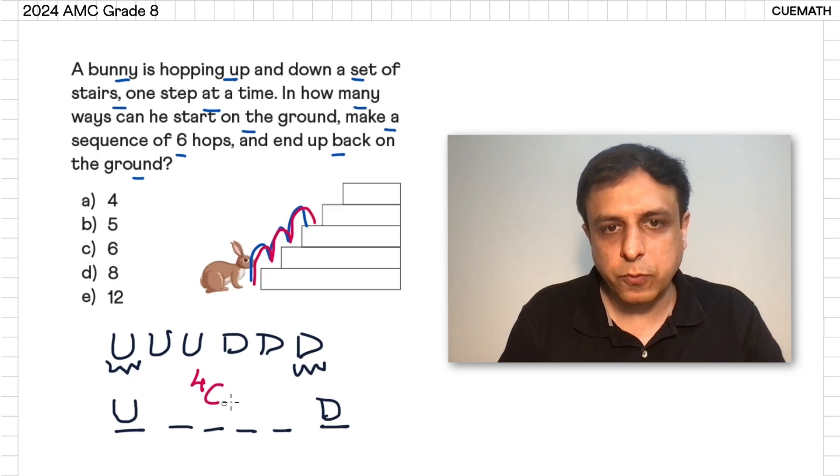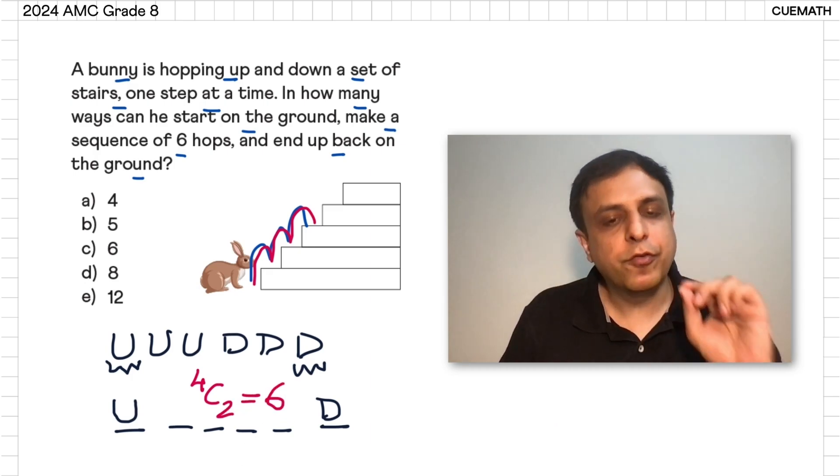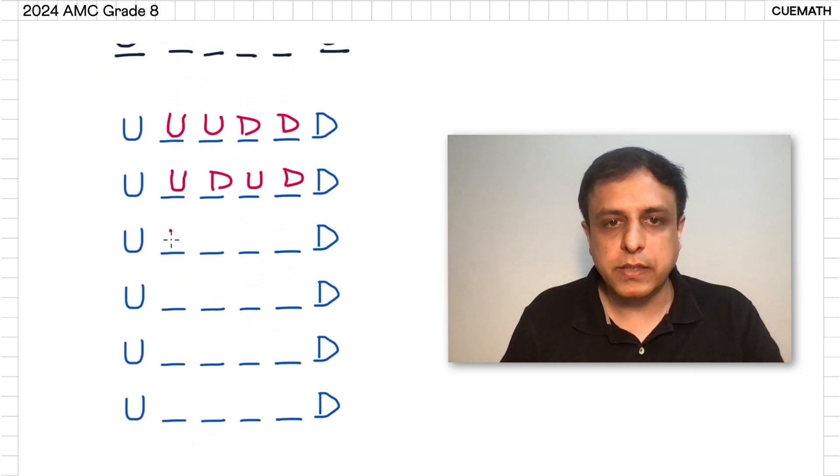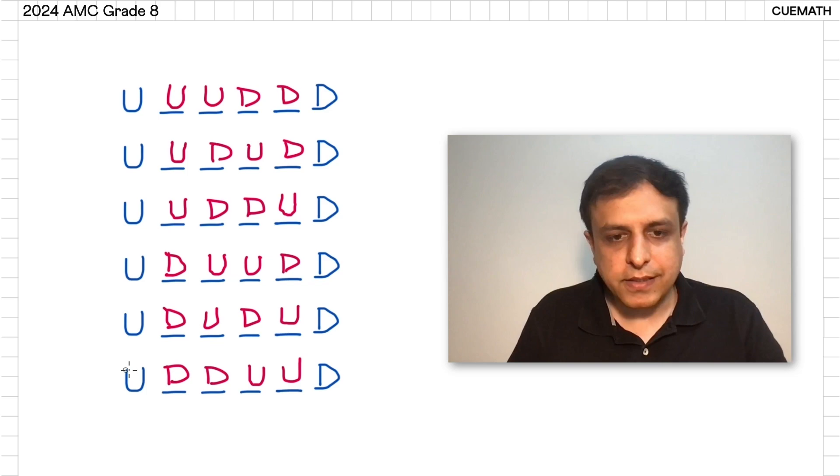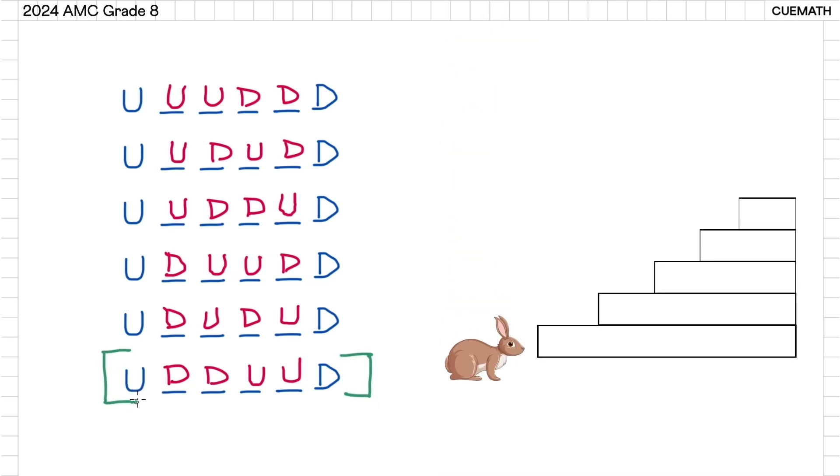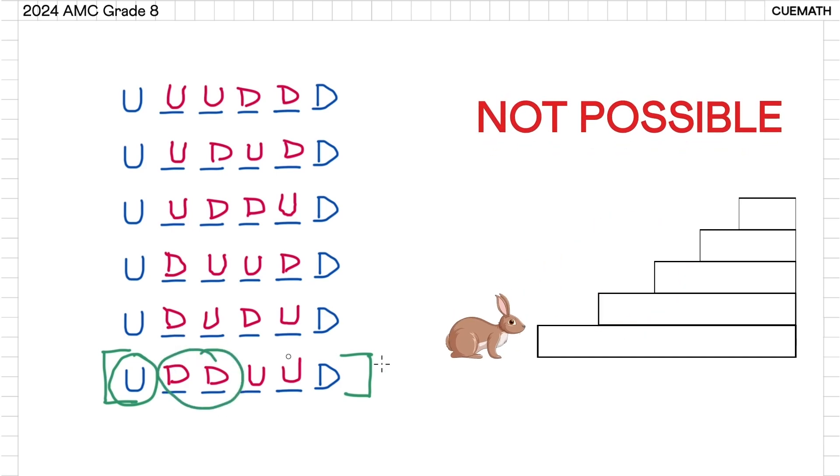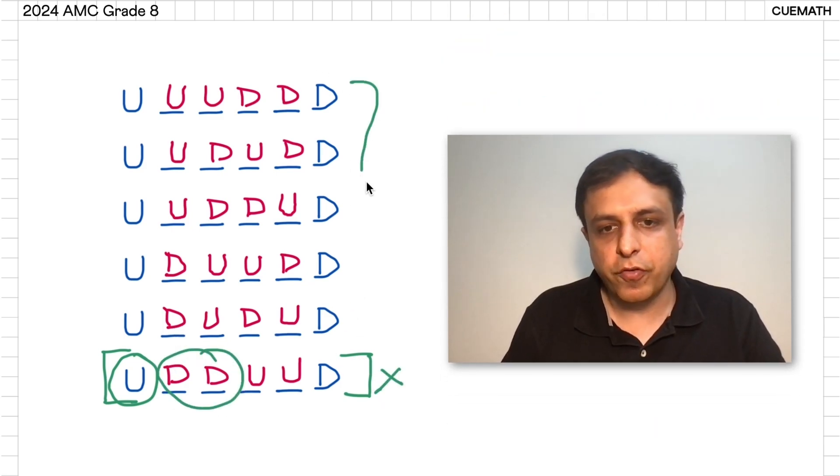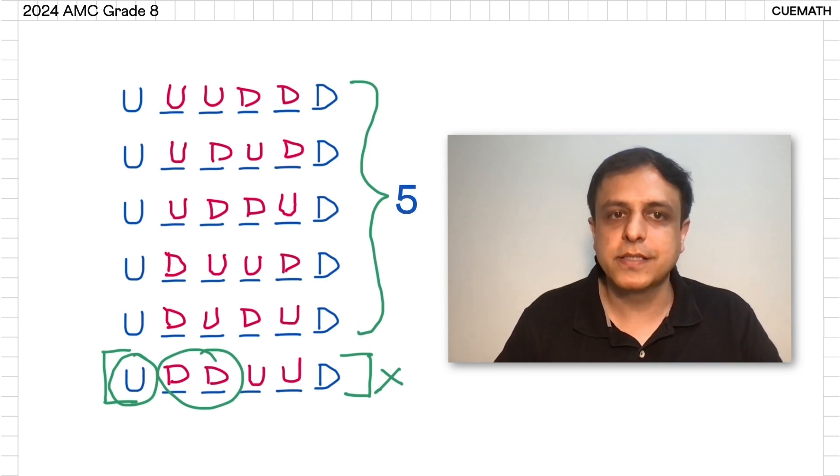So we get 4C2 or six strings, but we have to be careful here. If I write out all the sequences we get, we realize that this last sequence that I've written here does not work because it involves one step up and then two steps down, which is technically not possible. So we have to rule out this last sequence, and therefore we get five possible sequences. So five is our answer.